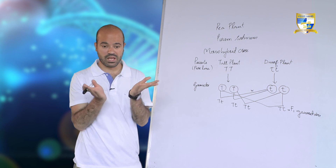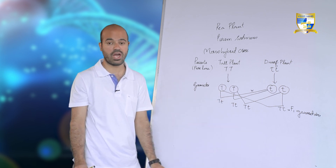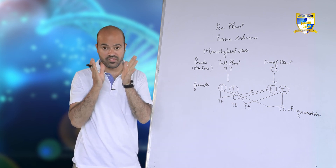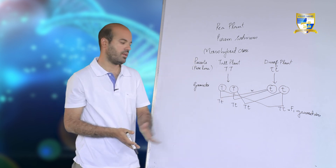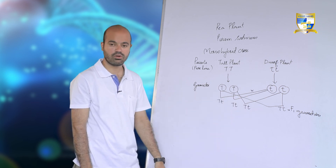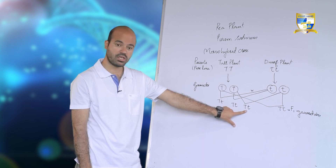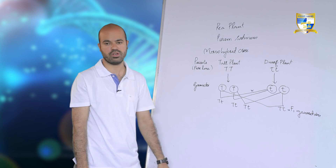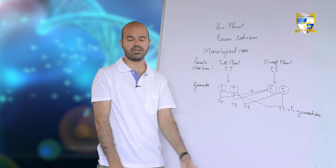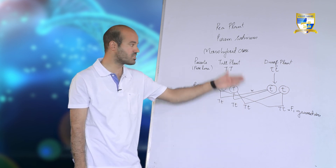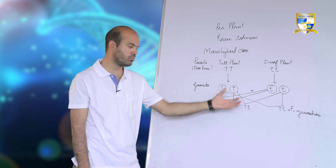Mendel observed this first filial generation and found that none of the plants were dwarf — all plants showed the genotype Tt. Since T is dominant over t, the dominant allele T expresses itself and all F1 plants showed tall height phenotypically. All F1 plants are phenotypically tall. Then in the next step, these F1 plants undergo self-pollination, and Mendel again observed the results — the outcomes of the second step of the monohybrid cross.